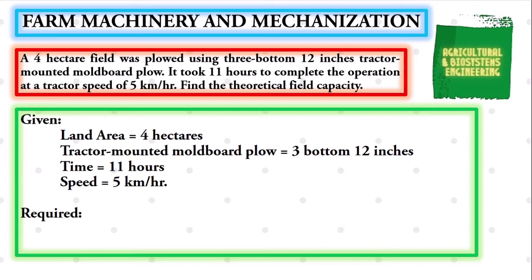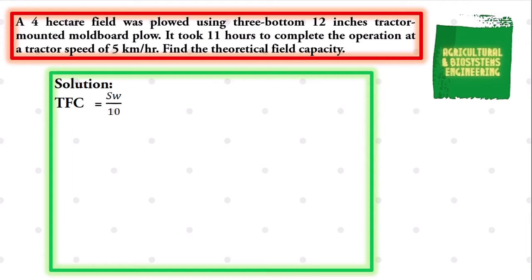After identifying the given and the required in the problem, we proceed in solution. To solve for theoretical field capacity, our TFC, we will use the formula: TFC is equal to S multiplied by W, all over 10.